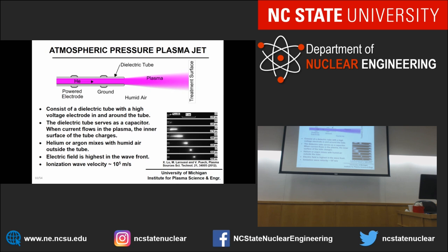Another plasma source, the atmospheric pressure plasma jet, is in many ways a type of dielectric barrier discharge. Typically it's a dielectric tube with helium — and sometimes argon — flowing through it, a powered electrode either wrapped around the outside or inside, and sometimes a ground electrode. The helium flows out and mixes with surrounding humid air. When a high voltage is applied, a discharge forms near the powered electrode and propagates down and outside the tube as an ionization wave — moving much faster than the gas flow velocity, using the same mechanisms as lightning.